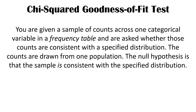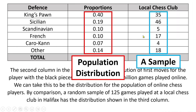It's helpful to summarize the chi-squared goodness-of-fit test, in part because we're going to see three different kinds of chi-squared tests and each is a little bit different. In a goodness-of-fit test, you're given a sample of counts across one categorical variable in a frequency table. Here we have one categorical variable — defense — with six categories, and a frequency table showing the frequencies observed in our sample.